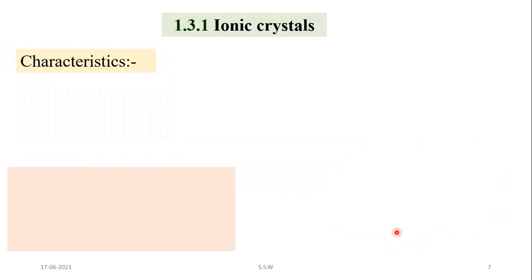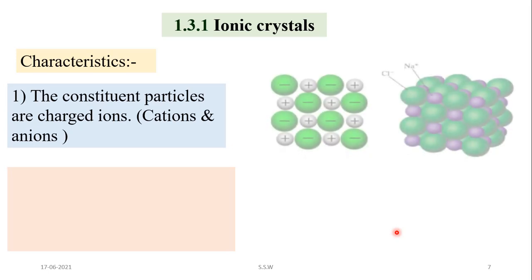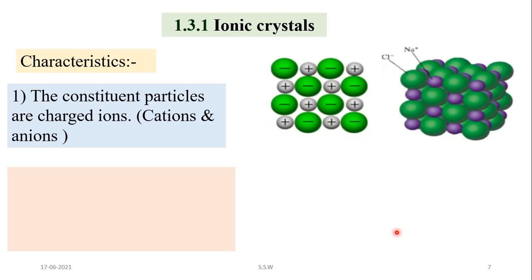Now we will see the characteristics of ionic crystals. The first characteristic is that the constituent particles are charged ions — cations and anions. In sodium chloride crystal, sodium ion is the cation and chloride is the anion. So charged ions are the constituent particles in ionic crystals.